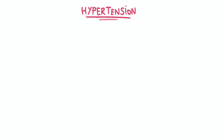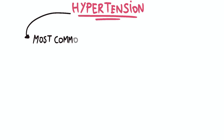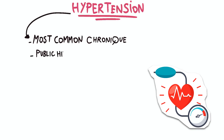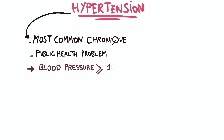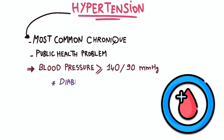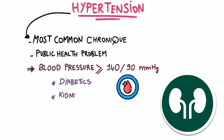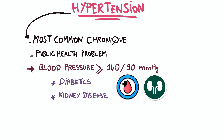Adult hypertension is the most common chronic disease and poses a significant public health problem. It is characterized by blood pressure values above 140 systolic or 90 diastolic, with a specific threshold for diabetic patients and patients with kidney disease.